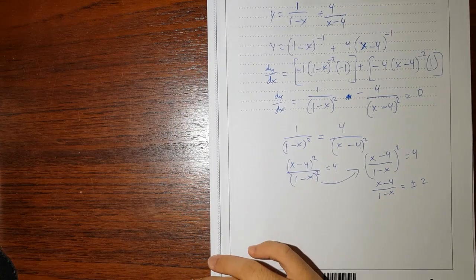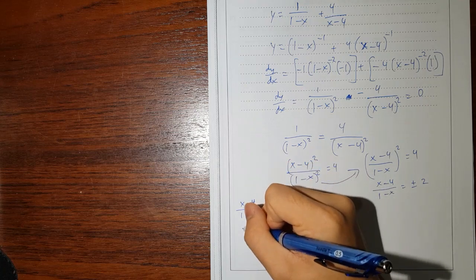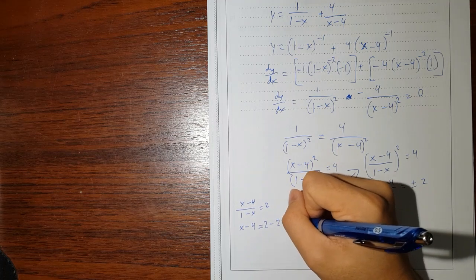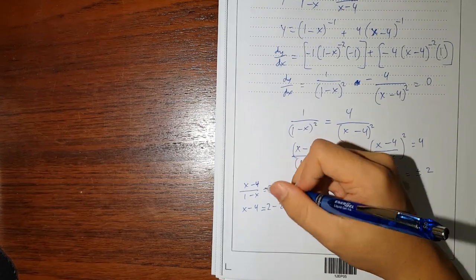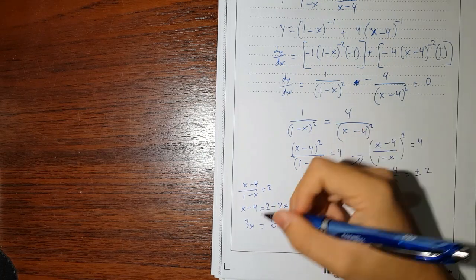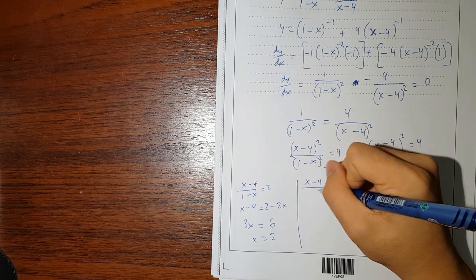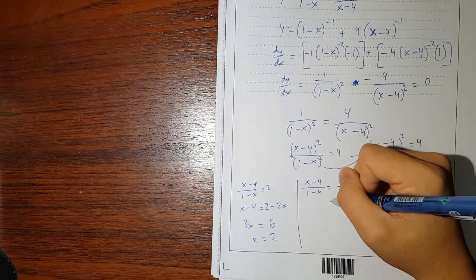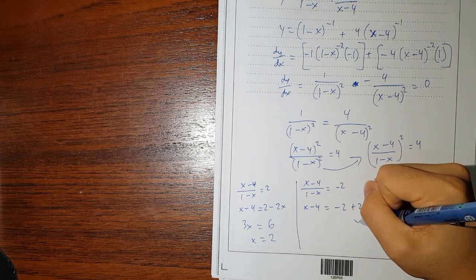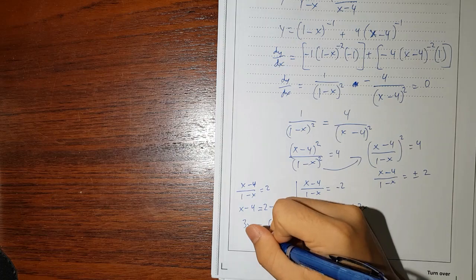Positive case: (x - 4)/(1 - x) = 2. Multiplying through: x - 4 = 2 - 2x. Adding 2x and 4: 3x = 6, so x = 2. Negative case: (x - 4)/(1 - x) = -2. That gives x - 4 = -2 + 2x, so -x = 2, meaning x = -2. These are the two x-coordinates.